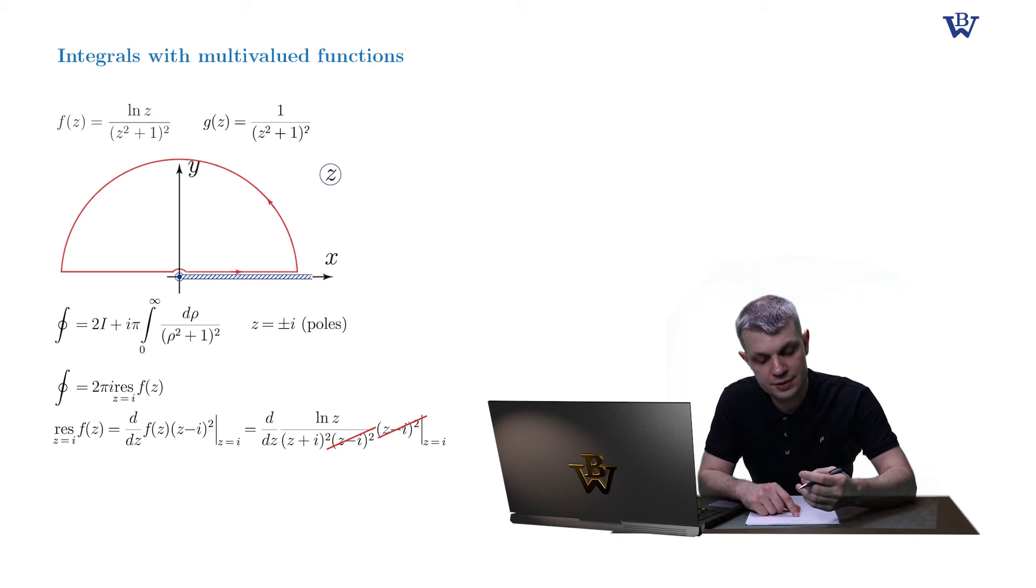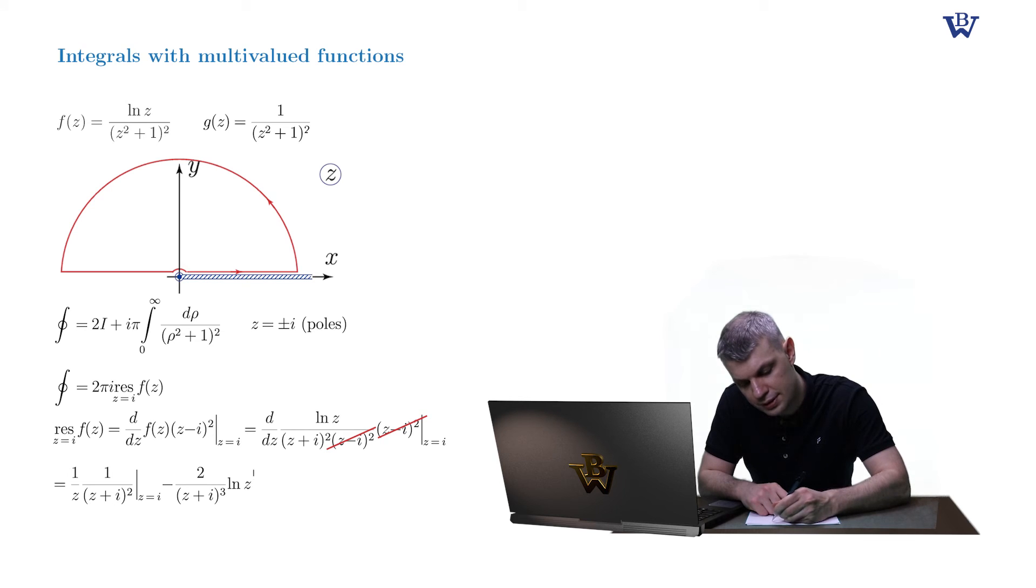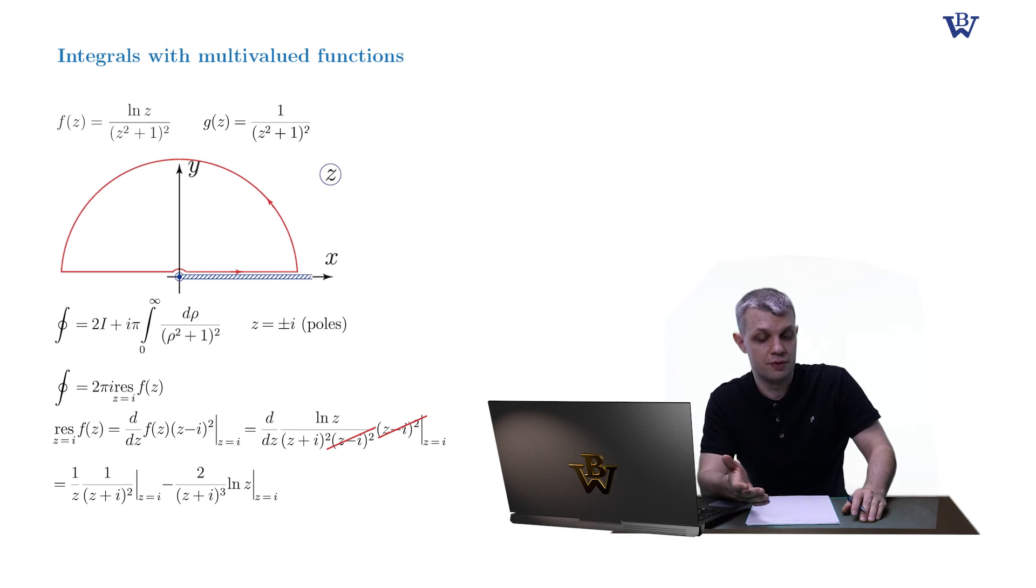And then we perform the differentiation. 1 over z factor comes from the differentiation of the log function. 2 over z plus i cubed comes from the differentiation of the denominator. And you see that the computation of the residue requires the knowledge of the log function at point z equals i.